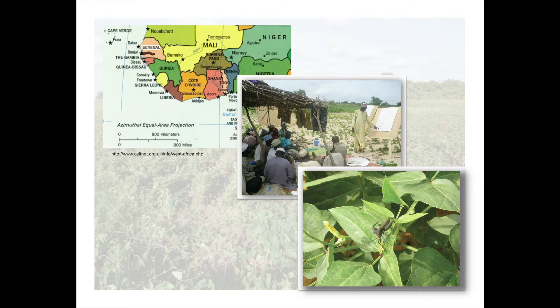When I train my graduate students to give talks, I always say, start off by telling me about the forest. Then step over and tell me about the area of the forest you're working in, the tree, the branch, and finally the leaf. And the leaf is the problem that you work on.